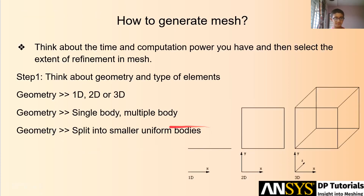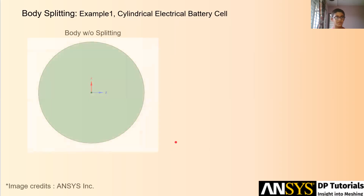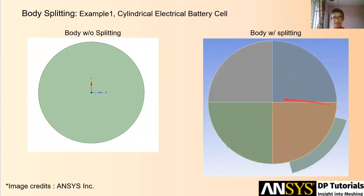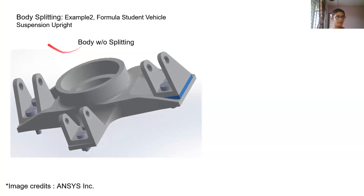Body splitting can be non-intuitive, so here are some examples. The first example is a cylindrical electric battery cell — a project done under a professor at university. The original body was a simple cylinder, and although a swept meshing method could be applied, it was not automatically giving a proper refined and continuous mesh. So the cylinder was split into four quarters, and each quarter can be individually handled to generate the elements.